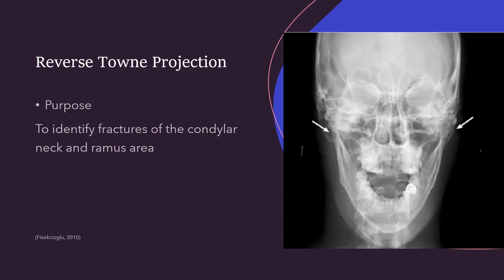The reverse Towne projection is wonderful at identifying fractures of the condylar neck and the ramus area. It's taken almost exactly like the posterior anterior one, however the patient's mouth is open and it's taken at a little bit of an angle. When the patient opens, the jaw not only moves open but also glides forward — it has a hinge and glide motion. So when they open, we're able to see the back part and also the front of the condyle and the coronoid process, making this really useful for identifying fractures or damage to the condyle and ramus.